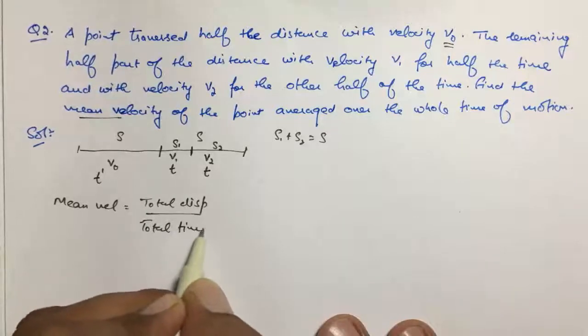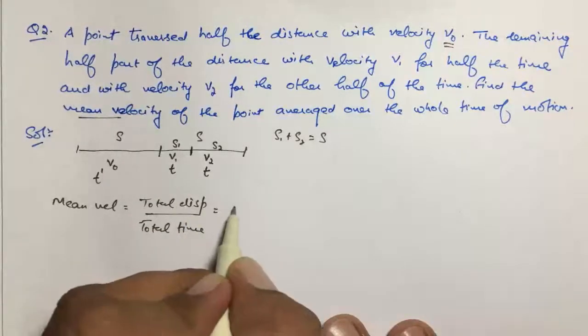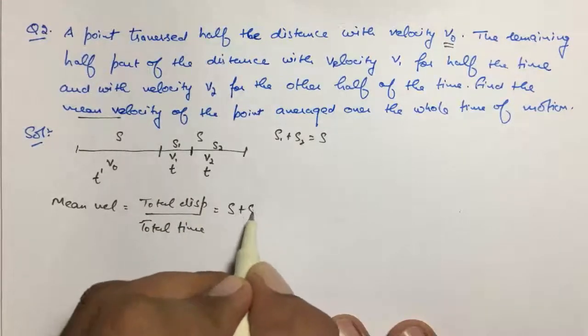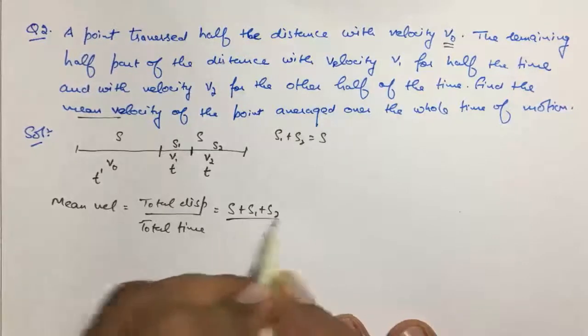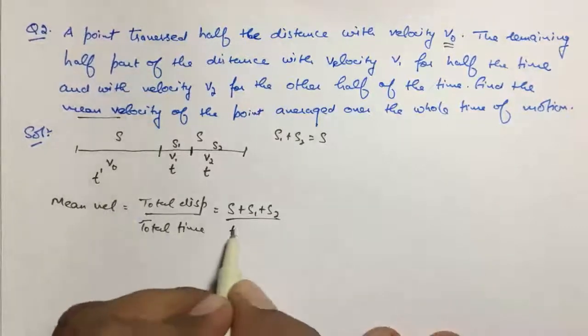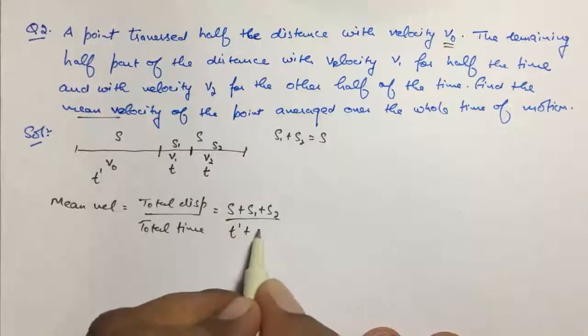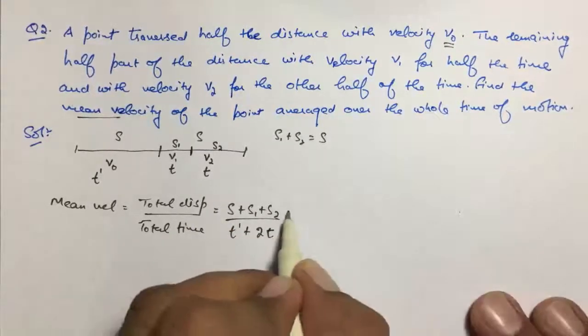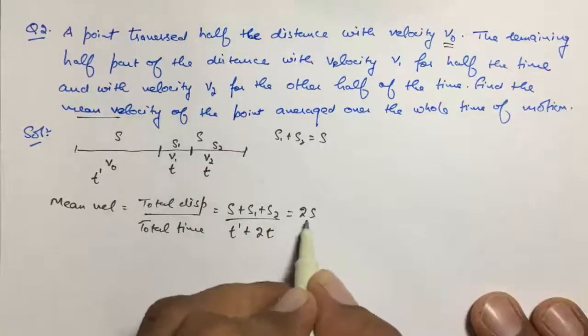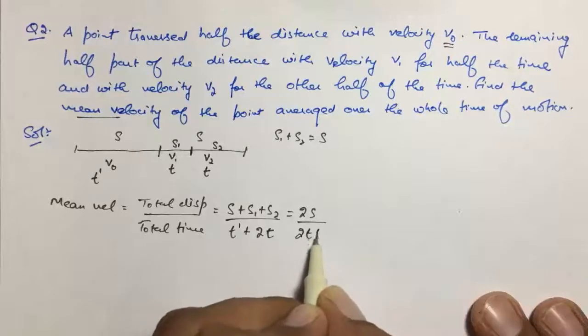The total displacement is S plus S₁ plus S₂, divided by total time T′ plus T and T. Here we have 2T, and it can be written as 2S upon (2T plus T′).